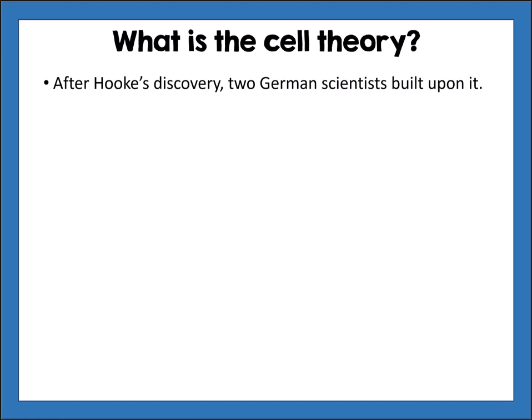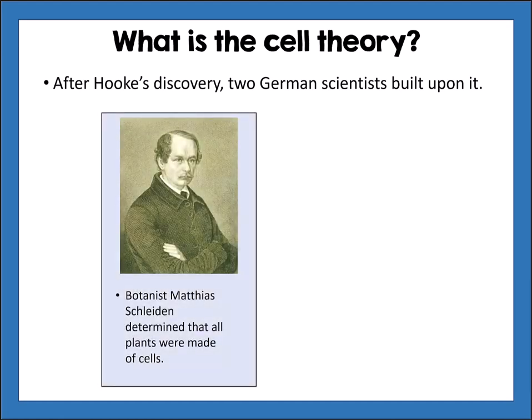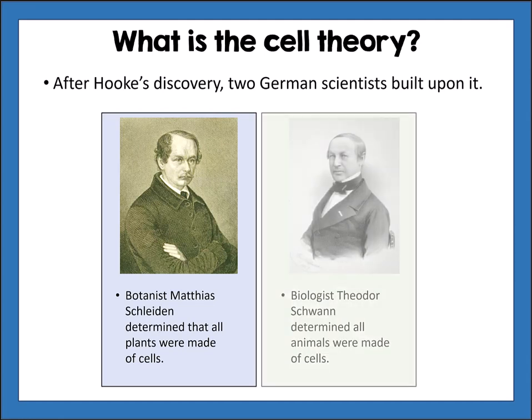After Hooke made his discovery of cells, two German scientists built upon his observations. The botanist Matthias Schleiden determined that all plants were made of cells — not only the cork Hooke had found, but all plants. Then a biologist named Theodore Schwann determined that all animals were made of cells.